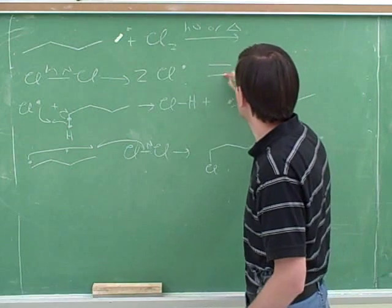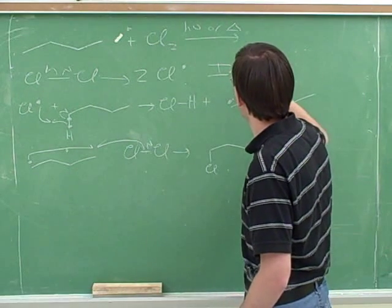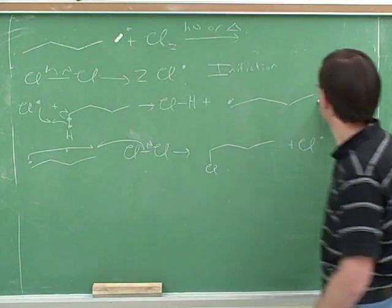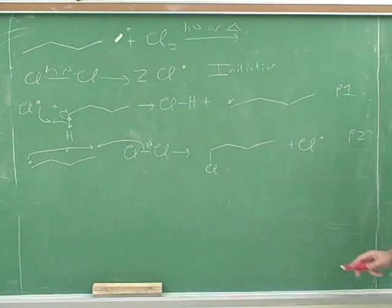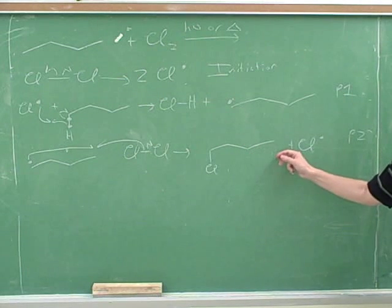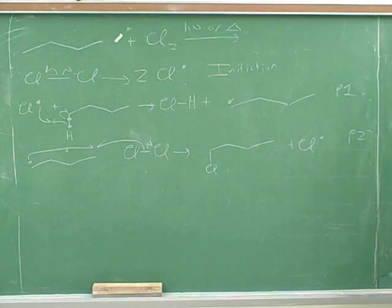The initiation. Yeah, this is initiation. What's the name for this step? Propagation step one. And this step? Propagation step two. Good. All right. So now we can say what's most likely to happen now after propagation step two? The radical is going to find the non-radical and have another propagation step. Propagation step one.